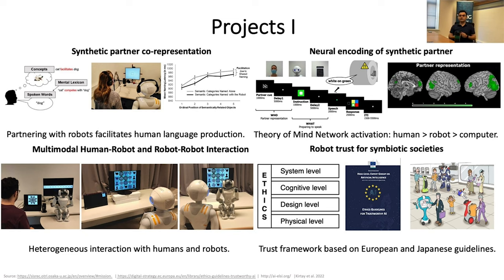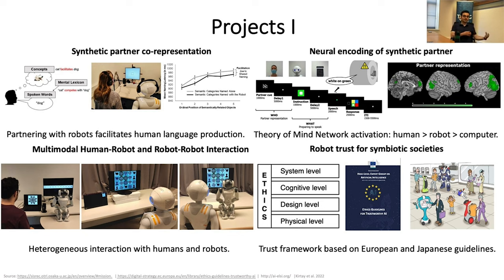The first project assesses whether humans co-represent robots as they would a human partner. From the psychology literature, we know that if you are naming entities within the same category, you become slower with each item. For example, if I name my favorite game developers starting with John Carmack, then Jonathan Blow, I become slower with each name. And if I partner up with someone, if they name their favorite game developers, I show the same effect — I become slower. This shows that we are somehow co-representing our partner's speech.